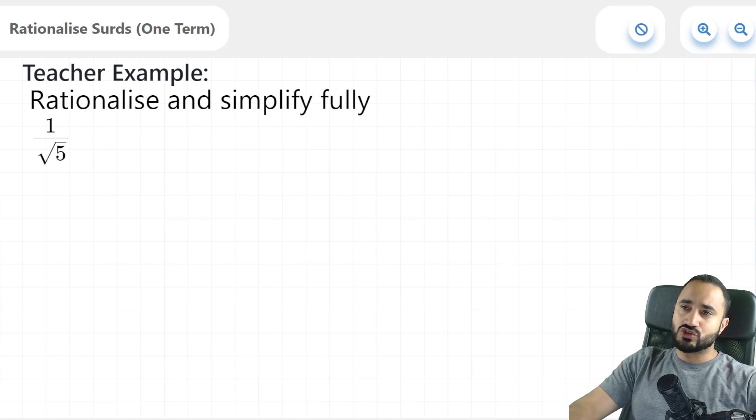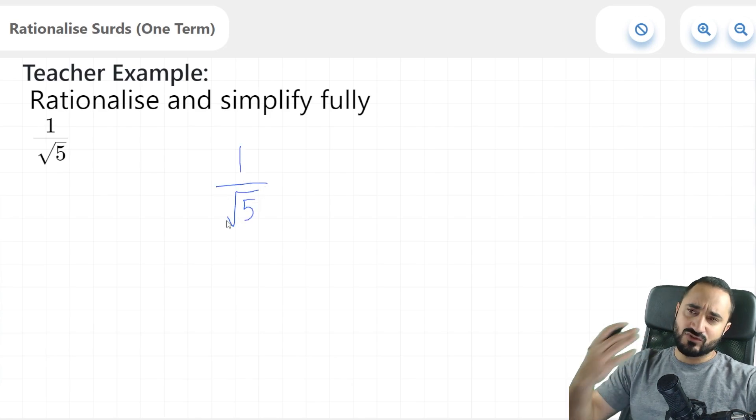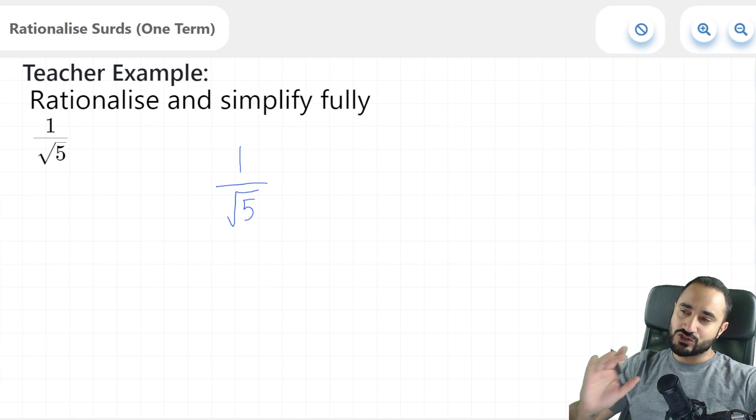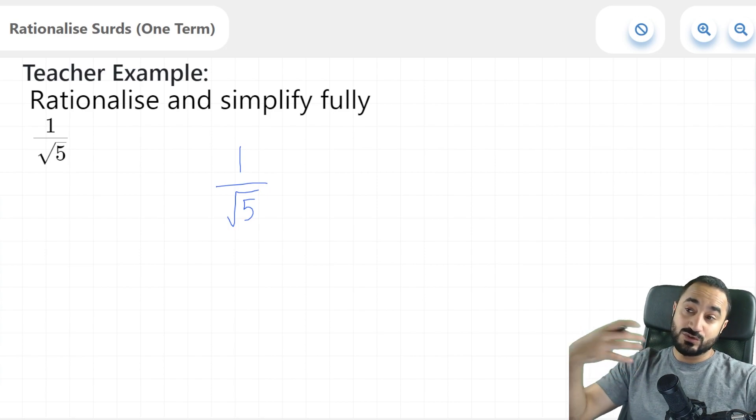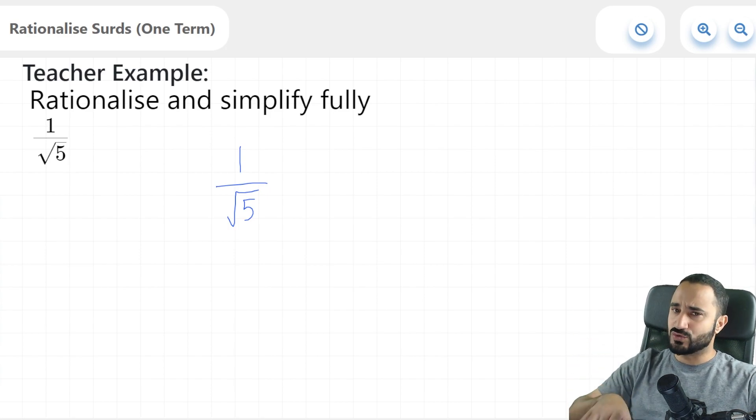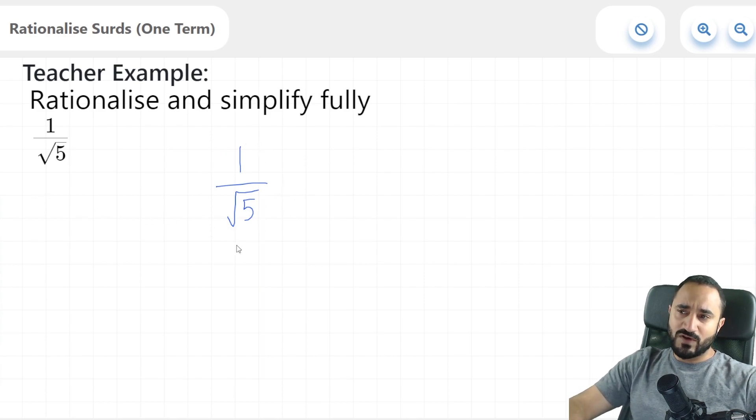Here in our first example, we're being asked to rationalize and simplify fully 1 over root 5. So I'm just going to write this 1 over root 5 here. Now, what does it mean to rationalize a surd? Essentially, it means to take the denominator or make the denominator that is currently a surd, and we know that surds are irrational roots of numbers, make it a rational number.